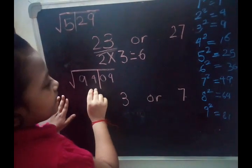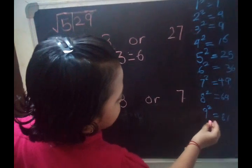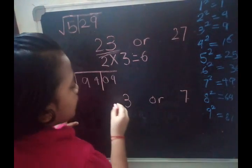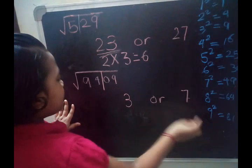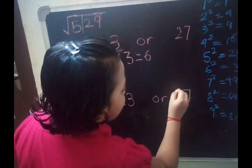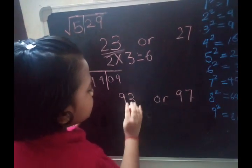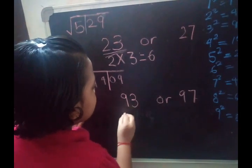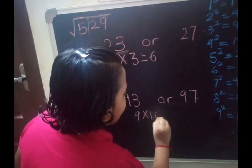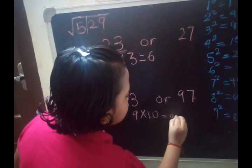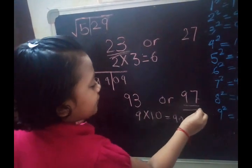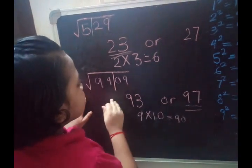On the left-hand side the number is 94. 94 is in between 9 squared (81) and 10 squared (100). Since 9 squared is less than 94, we take 9 in the tens place. We leave the unit space — the remaining number is 9 — and do 9 into its next number 10: 9 × 10 = 90. Since 94 is more than 90, we take the higher option: 97. The square root of 9409 is 97.